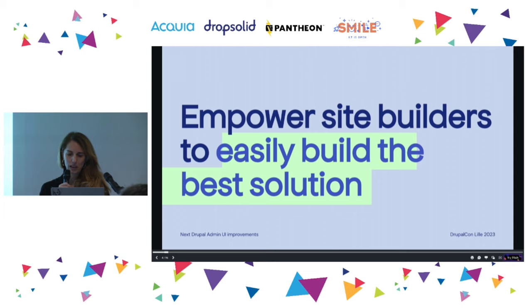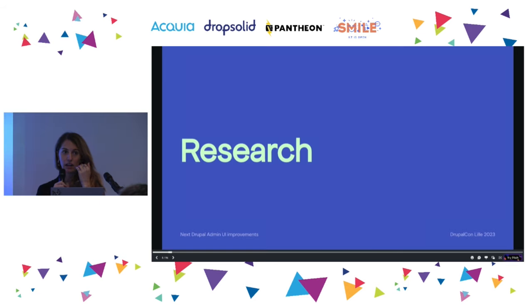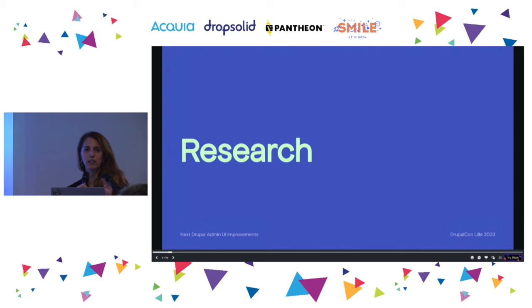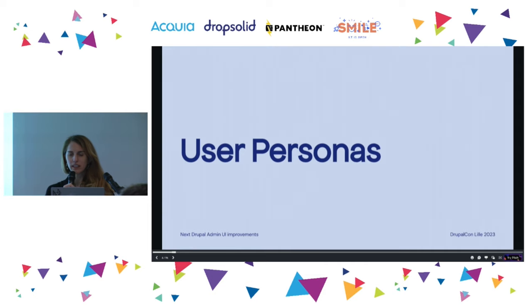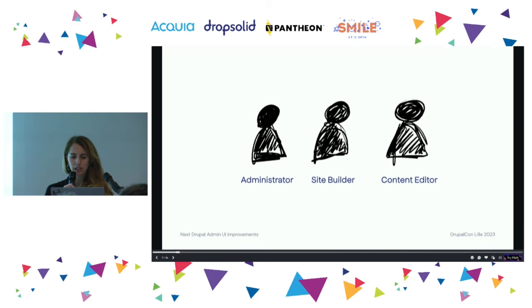All this started a while ago. We started with research a lot of time ago — months ago. And this is not just about the navigation, which you probably already heard about. It's about making the whole UI better. So we first needed to identify who we were working for, which people were out there. We came up with three main personas: the site administrator, the site builder, and the content editor.